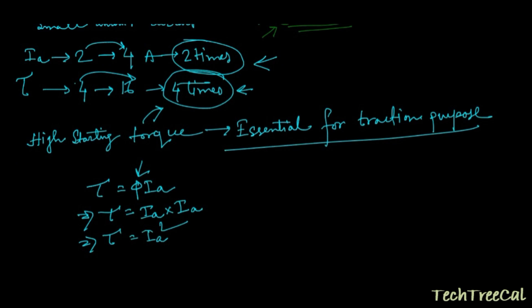So we are getting torque is equal to Ia square, that is the square term of your armature current. That means if you increase your armature current, the torque will be increased by its square number. So you are getting a high torque.